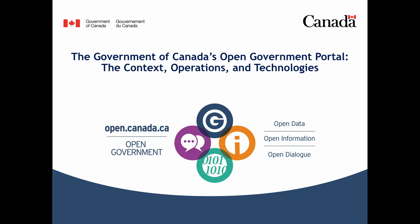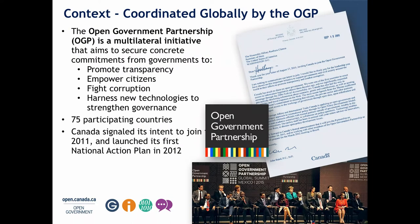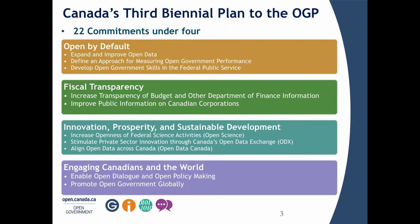In Canada we coordinate our open government activities through the Open Government Partnership. Canada joined in 2011 and launched our first national action plan in 2012. The goals are to promote transparency, empower citizens, and fight corruption. There are now 75 member countries, with sub-national membership as well — Ontario is a member. We commit to a biannual plan with 22 commitments under four categories.